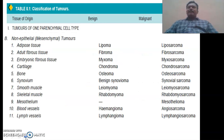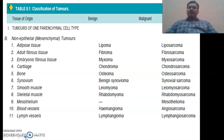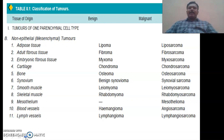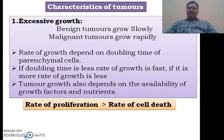For mesenchymal cells: if it is adipose tissue — benign tumor is lipoma, malignant is liposarcoma. Adult fibrous tissue: benign is fibroma, malignant is fibrosarcoma. Embryonic fibrous tissue: myxoma and myxosarcoma. Cartilage: benign is chondroma, malignant is chondrosarcoma. Bone: benign is osteoma, malignant is osteosarcoma. This is how we name tumors in the case of mesenchymal cells.